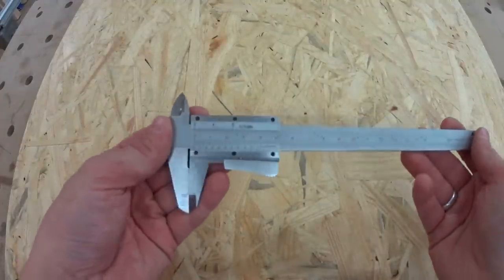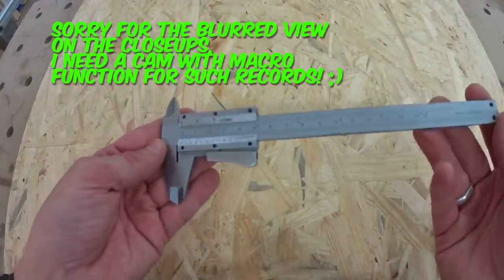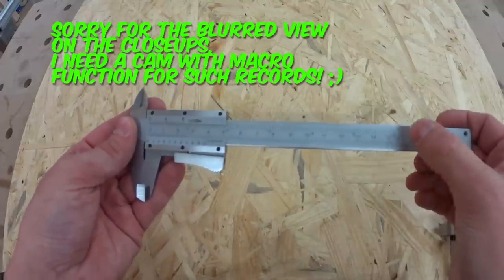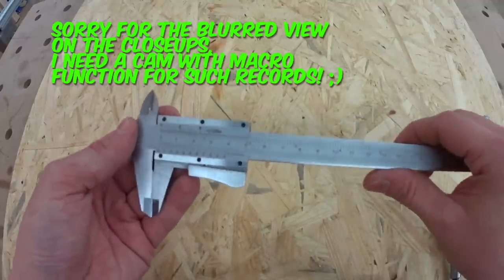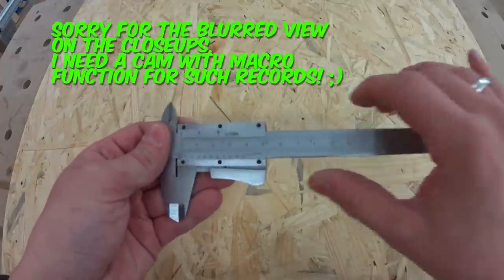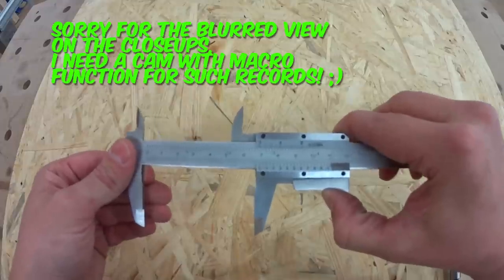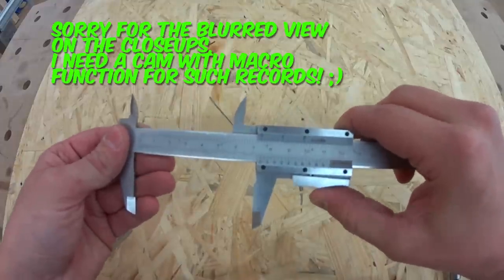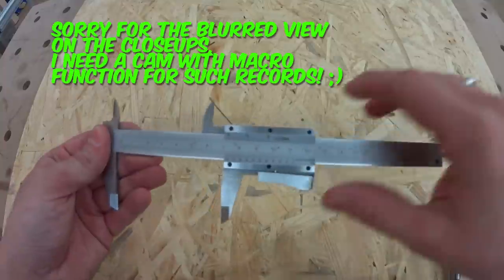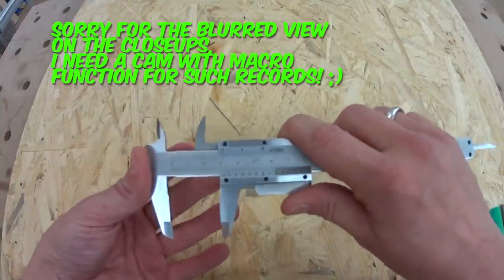This is my caliper that I use in my shop here. This is a pretty much standard 15 cm or 150 mm and 6 inch caliper. You can get them in different lengths from about 7.5 cm, 75 mm up to I guess 2 meters or so are the biggest ones.